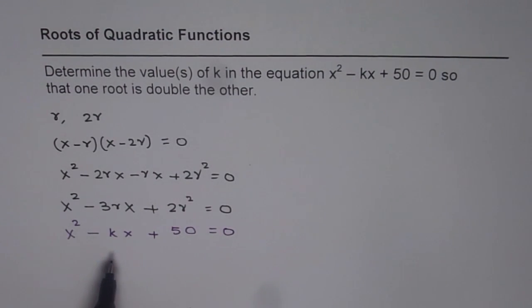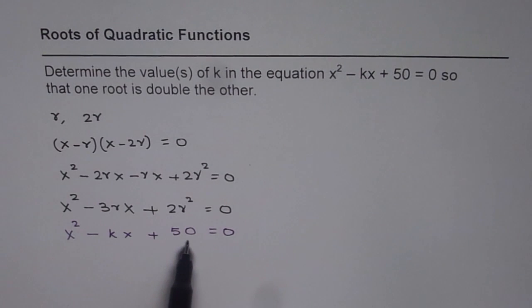If our equation x² - kx + 50 = 0 has to have two roots where one is twice the other, in that case, these two equations should be similar or exactly the same.